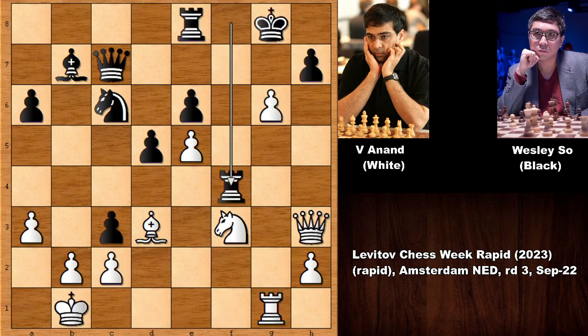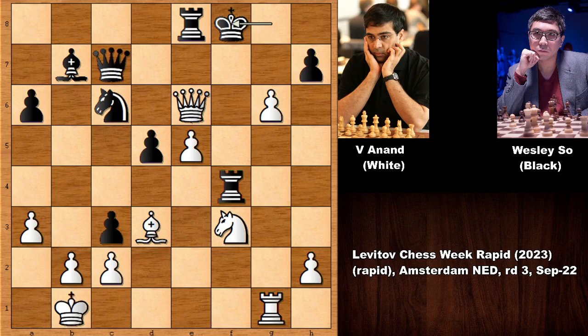Rook takes on g1, then rook takes on f4, and queen takes on h6. We have king to f8, and it is white to move. Anand played gxh7, and after this move, Wesley So resigned. What a game!